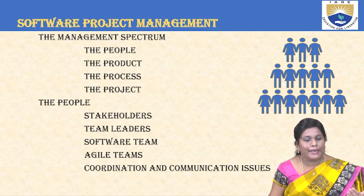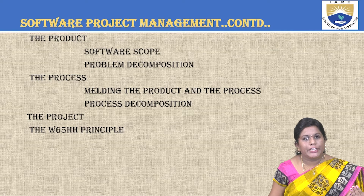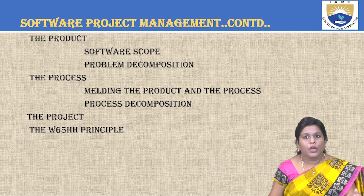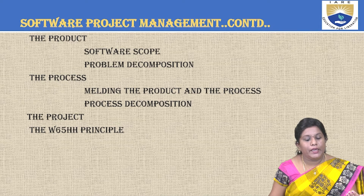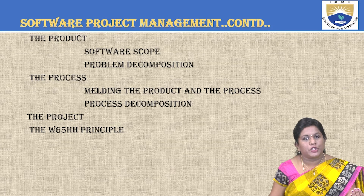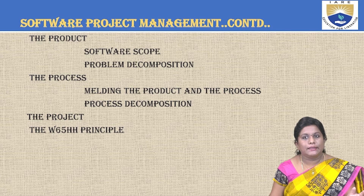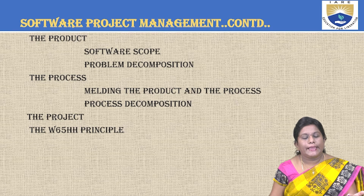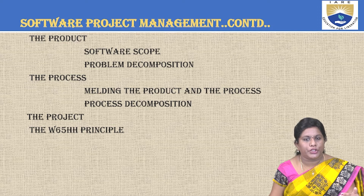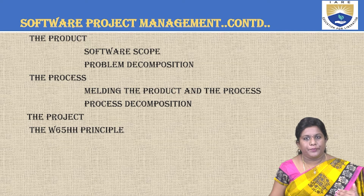Moving to the next category — product. Initially we need to know the scope of the project, also called software scope, then problem decomposition. Moving to process, we'll deal with melding the product and the process, and process decomposition. Finally, we'll focus on what exactly a project is from the initial stages to the end user, and the W5HH principles.